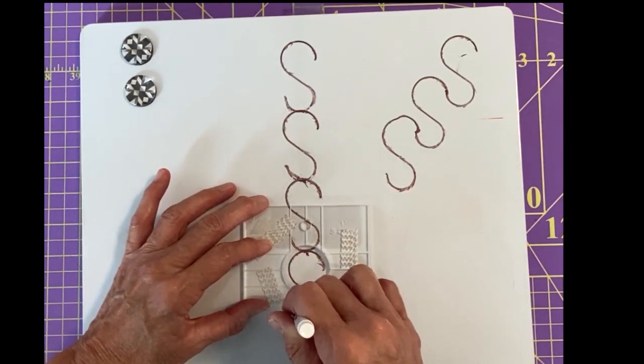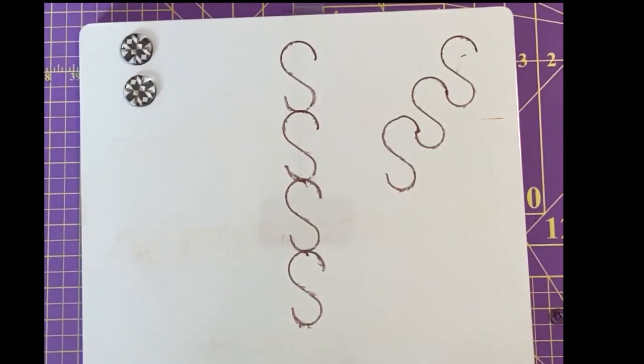Obviously your needle is not going to move the way my little disc does here. So that is the way you get a line of S's working through a border. So let's go to the machine and see what it looks like when we're actually doing the quilting.